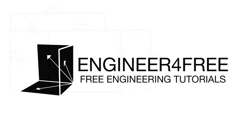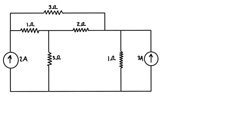Welcome back. Doing another example with nodal analysis to solve the voltage drops and current through each resistor. In this case we have a circuit with two independent current sources. The very first step is to pick a node and ground it — that becomes our reference voltage, our zero for the rest of the problem. It helps to pick a node with the most branches connected to it, and it also often helps to connect power sources to it, especially voltage sources.